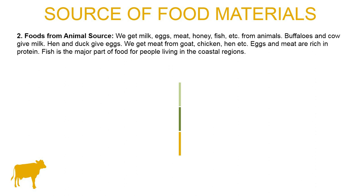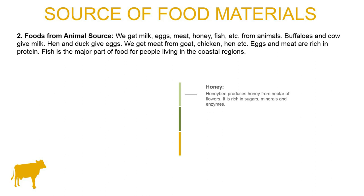Fish is a major part of food for people living in coastal regions. Honey is produced by bees from the nectar of flowers. It is rich in sugars, minerals and enzymes.